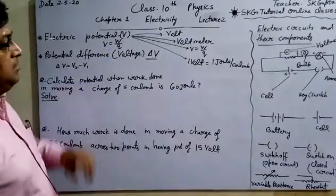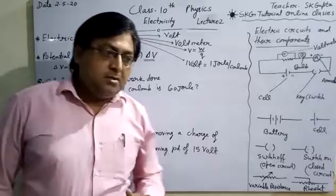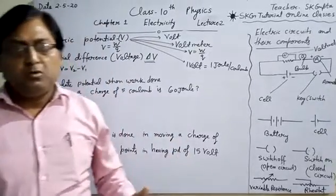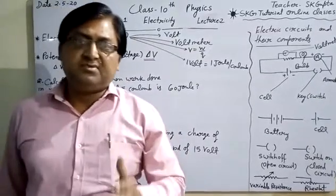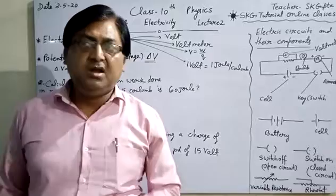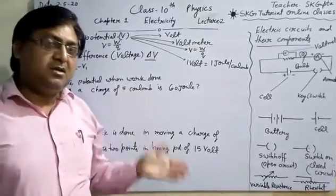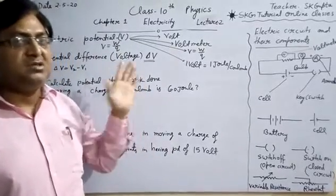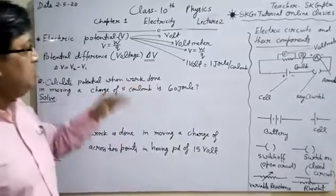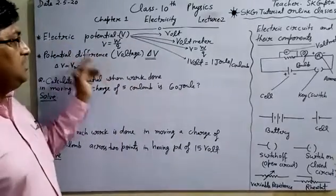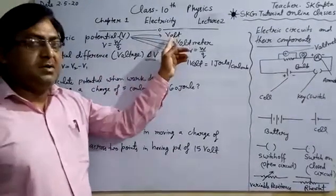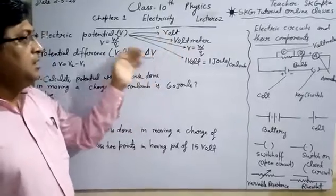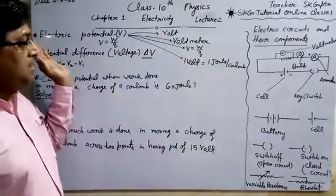The amount of work done to bring a unit positive charge from infinity to any other point in the circuit is called electric potential.